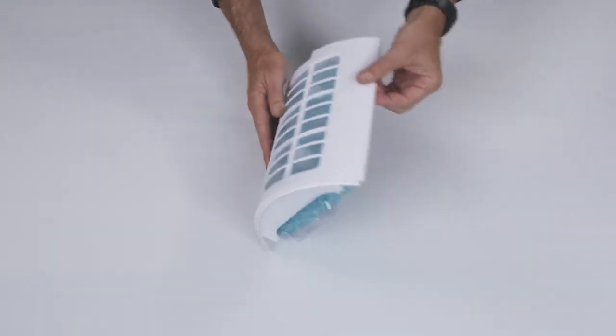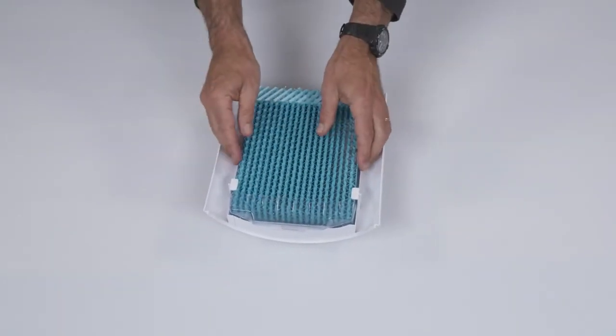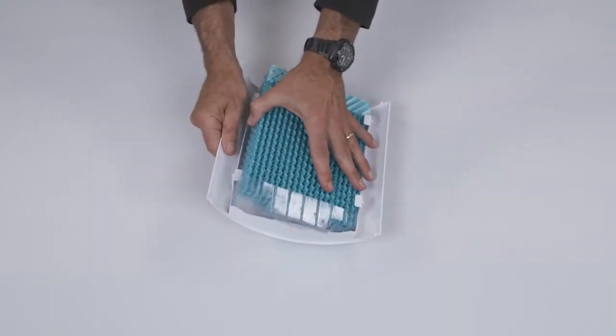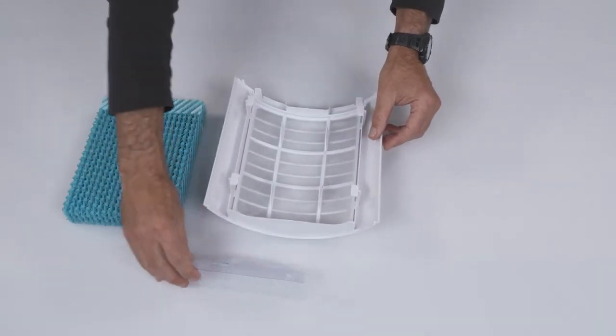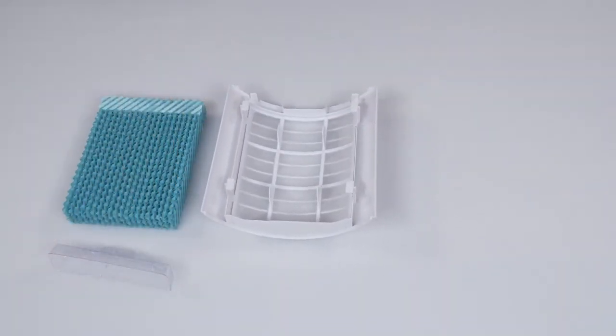The rear sponge is attached to the rear panel. Slightly flex the panel to release the sponge from the retaining tabs. Take the plastic holder off the bottom of the sponge and put to the side.